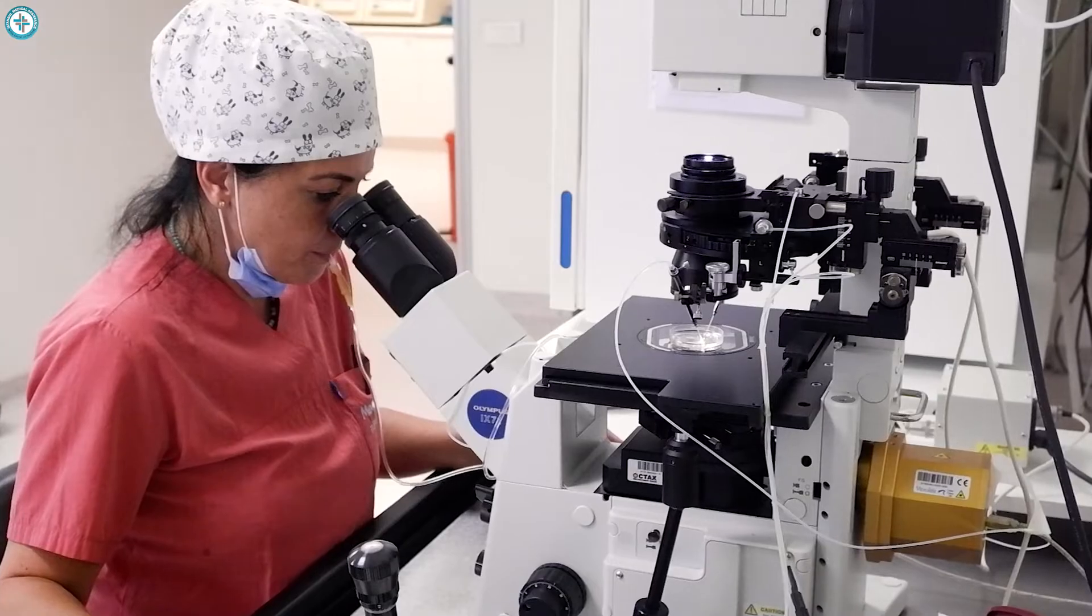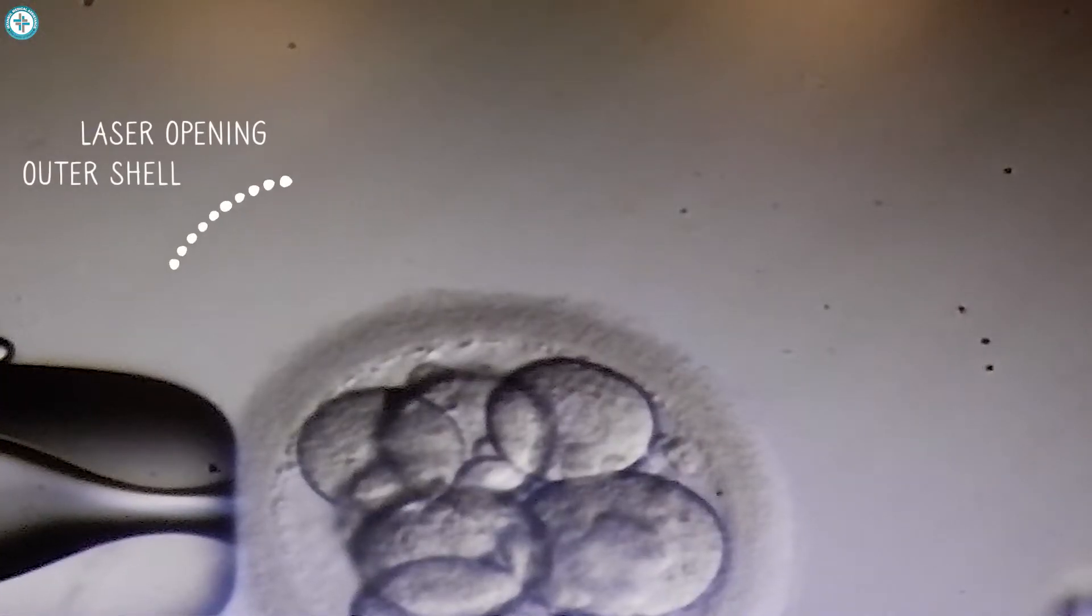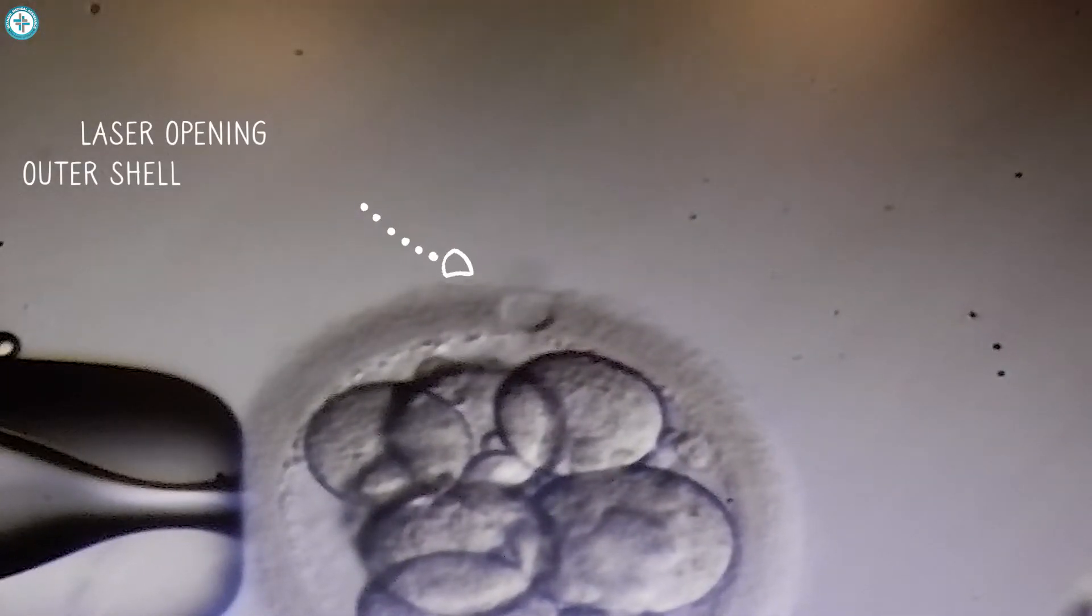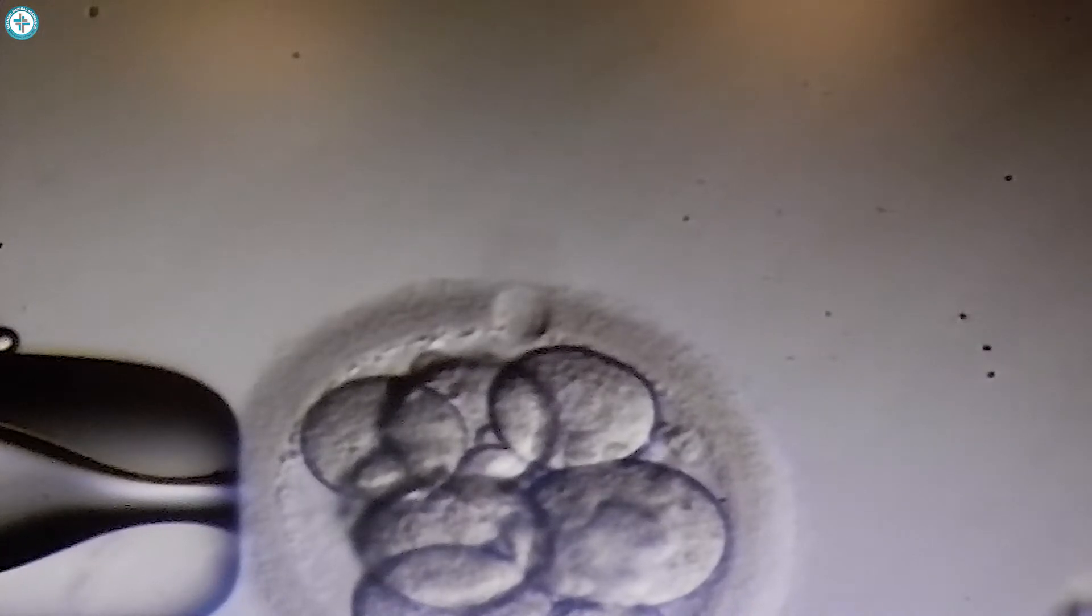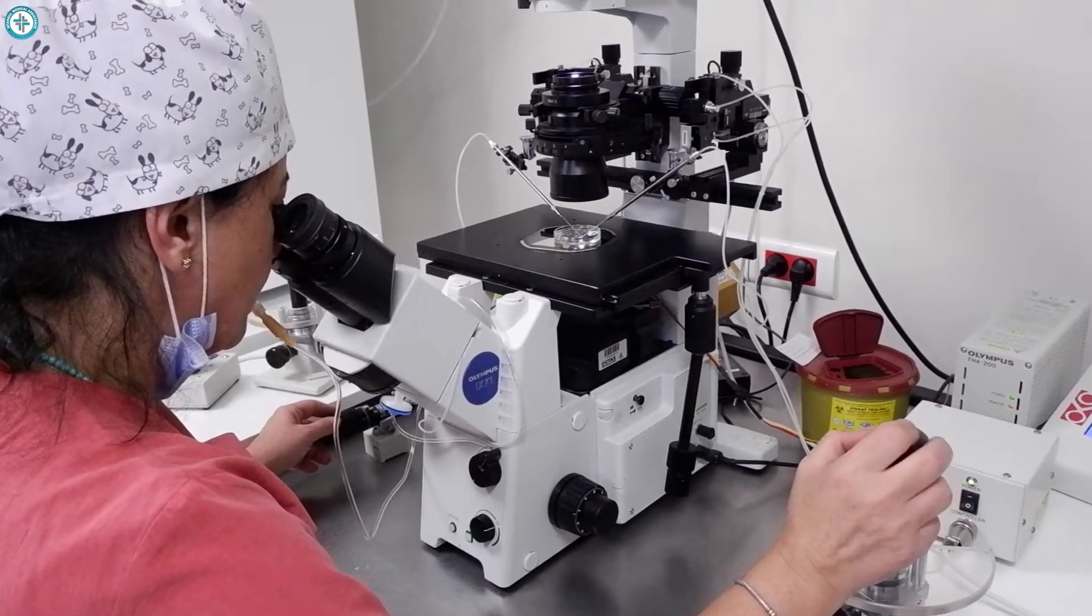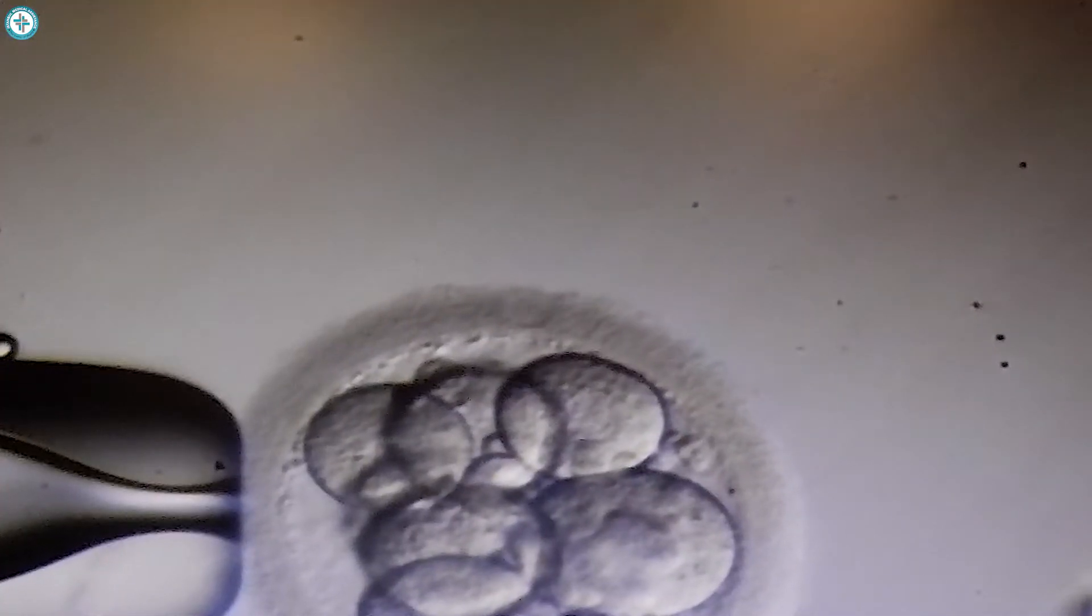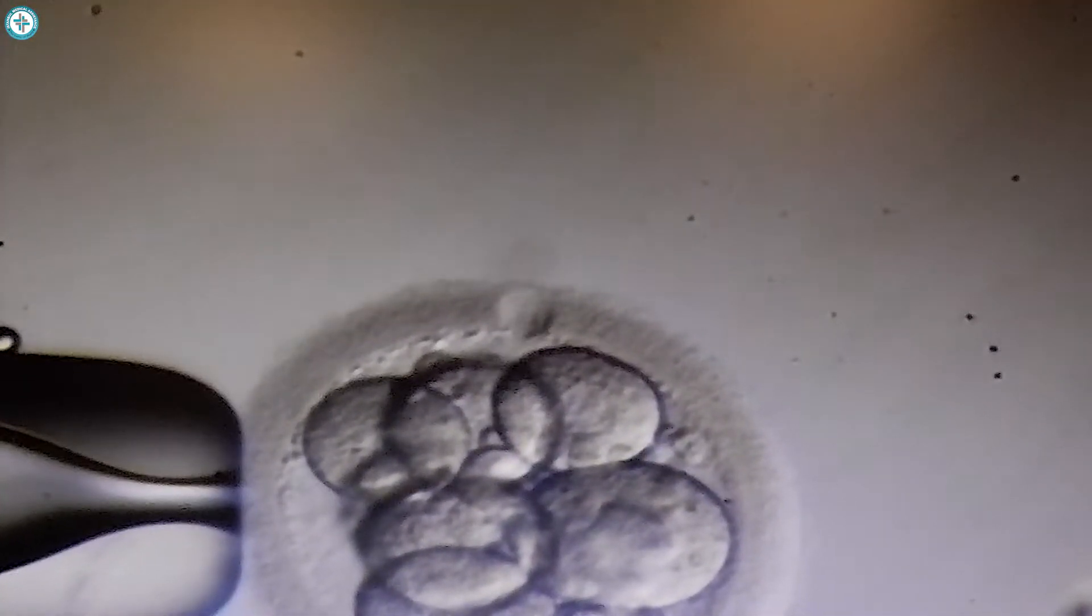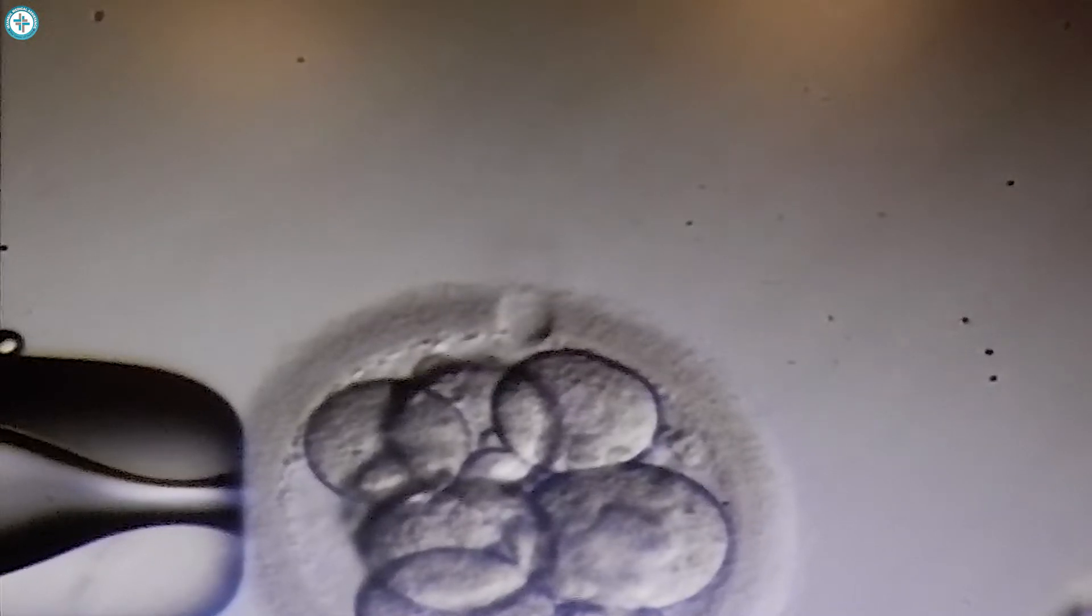For laser assisted hatching, she uses a laser device to make an extremely precise opening on the outer shell of the embryo. The goal of this procedure is to aid the process of embryo hatching and increase the chance of implantation.